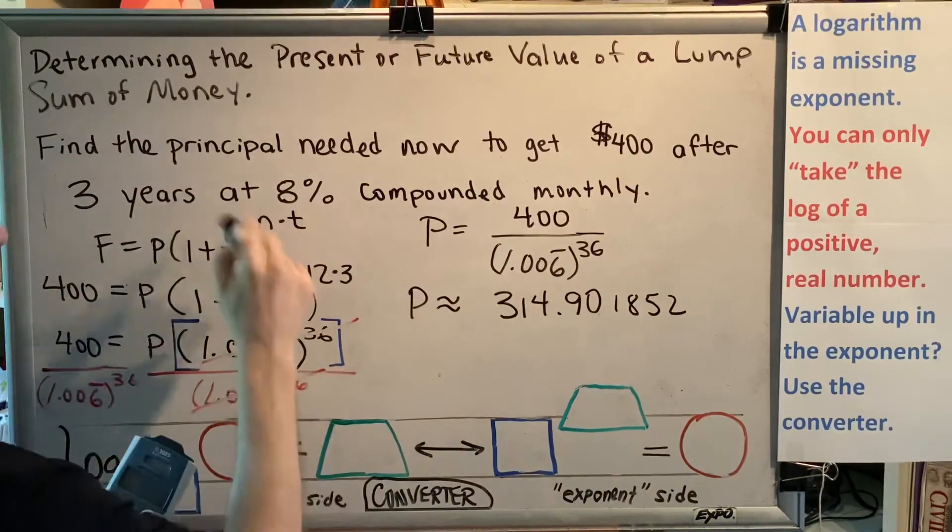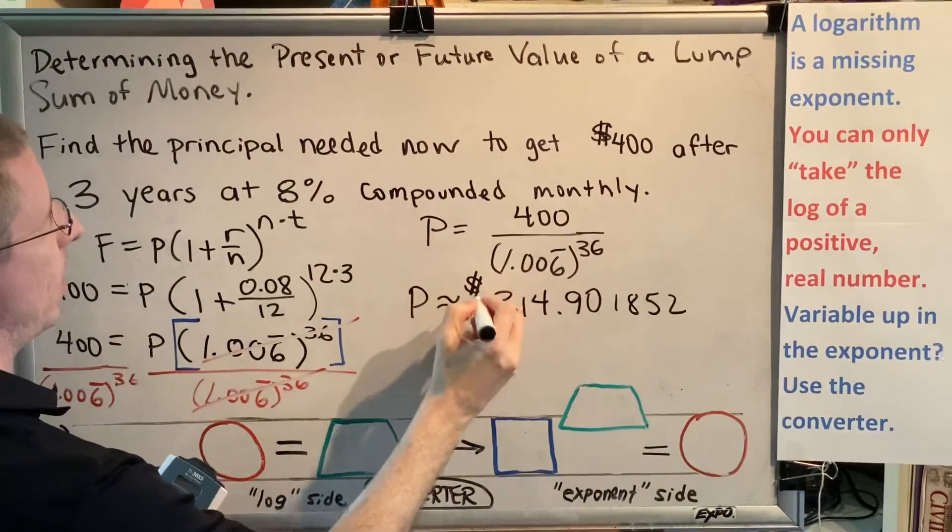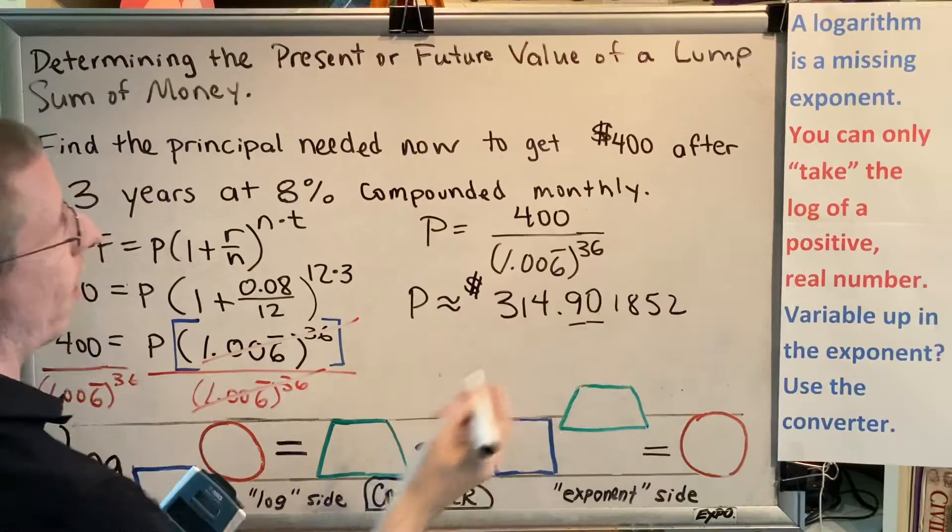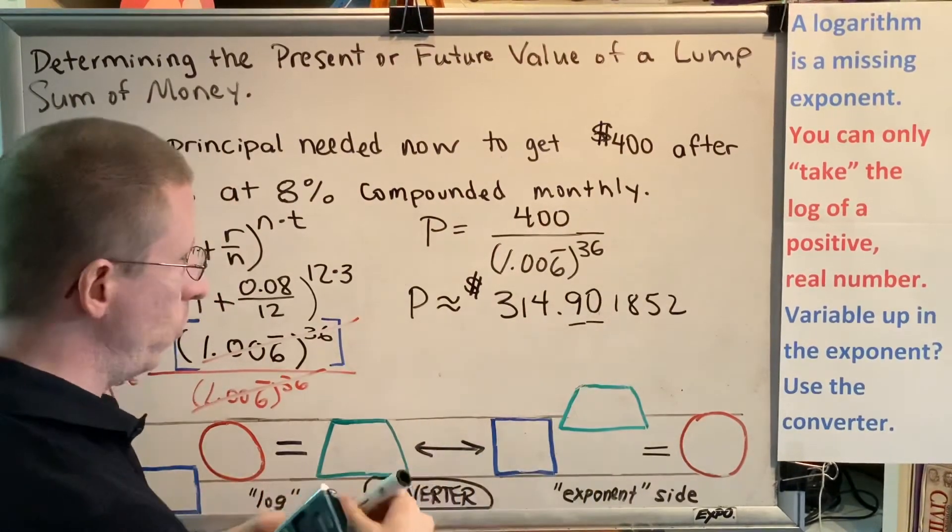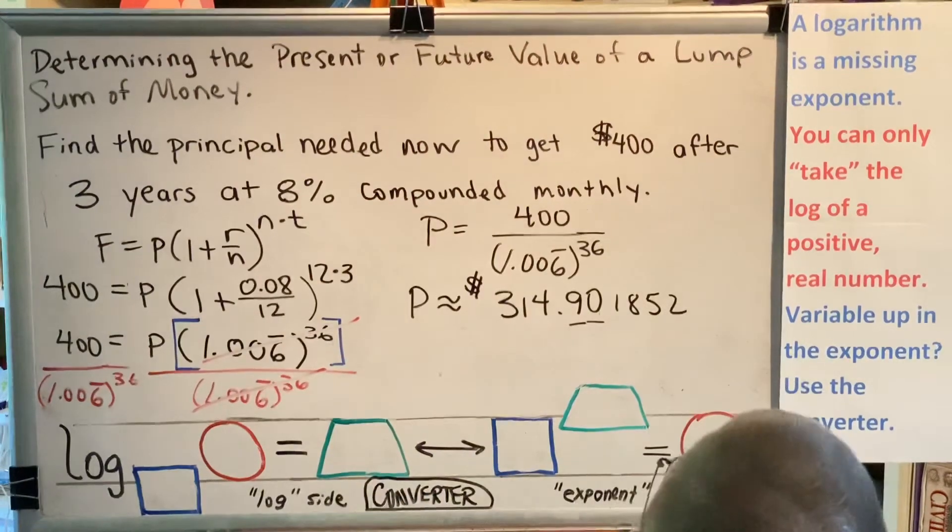Of course, this is principal, this is money. So that means I need two decimal places, one for dimes, one for pennies. And this one tells me that I should round down, which means I have $314.90.